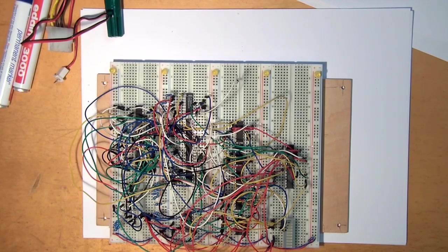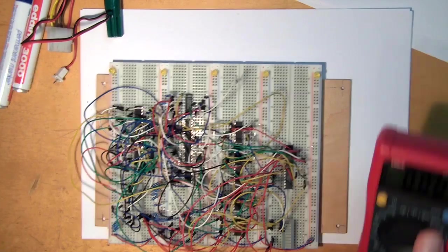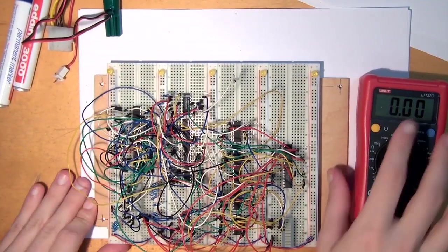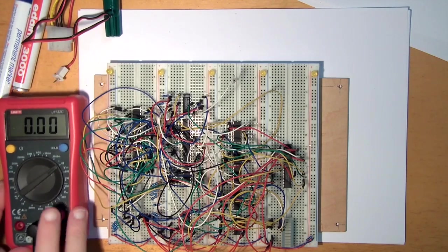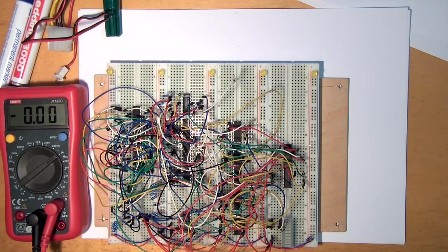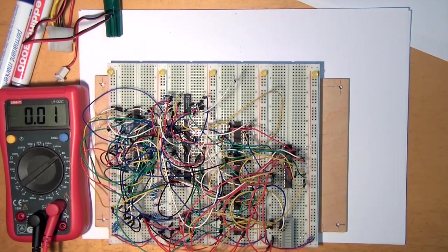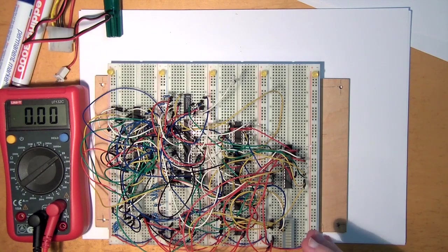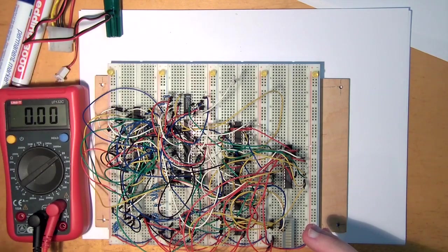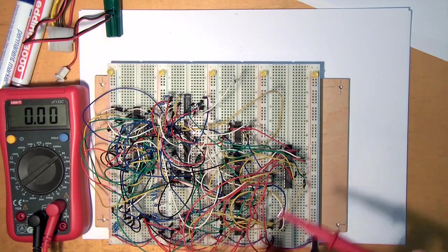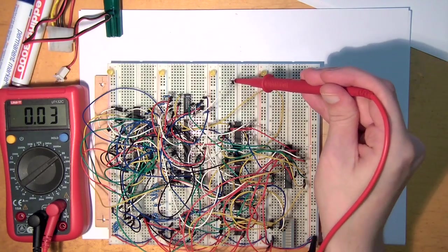And now you see why the cheapest multimeter that I listed in the 'go to have' category in the first episode of the series is a nice idea, because now we can actually use it to measure our voltage. So I'm just going to measure our voltage between ground and this right here, and let's see what it is.